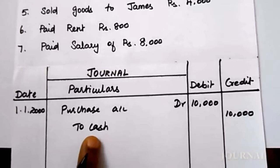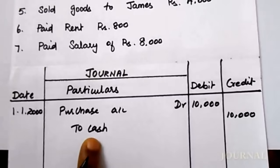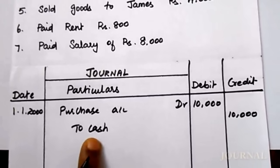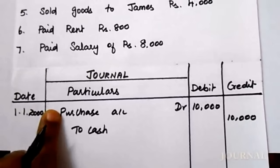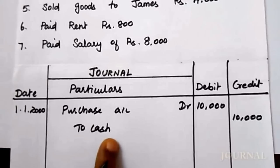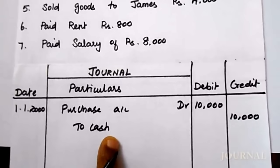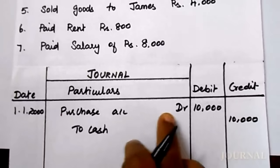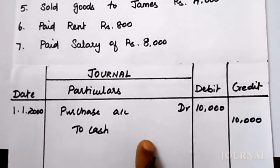Cash is a real account. What is the golden rule for real account? Debit what comes in, credit what goes out. When you purchase something, cash goes out — so enter on credit side. Goods comes in by way of purchase — so debit purchase, credit cash.